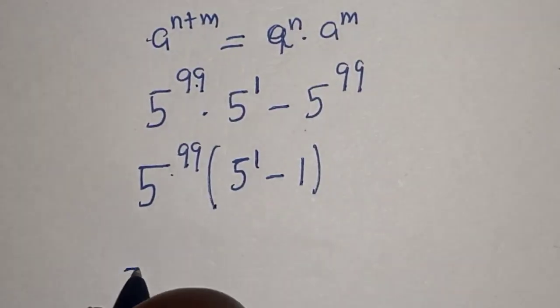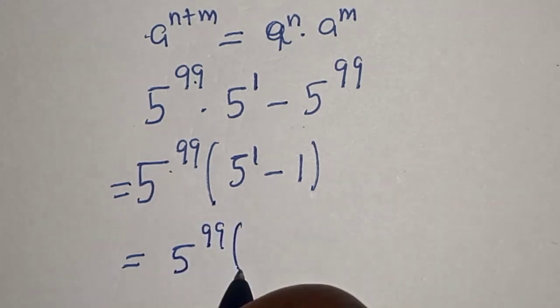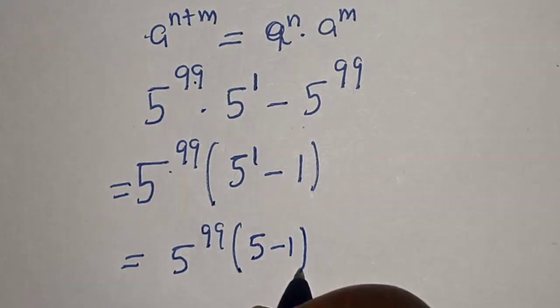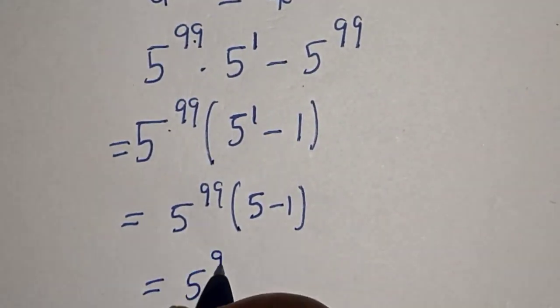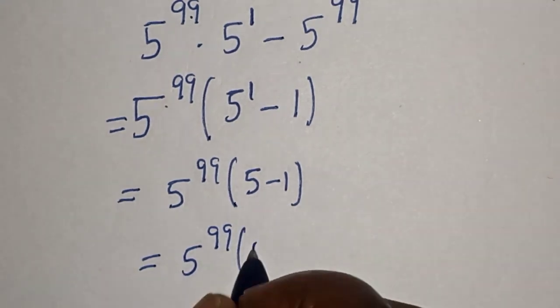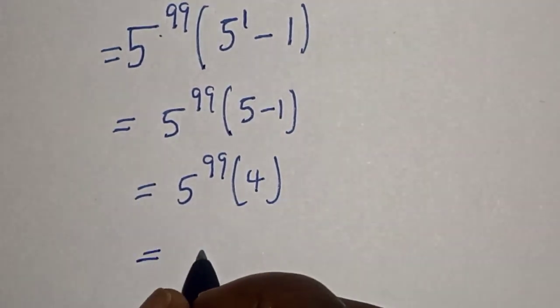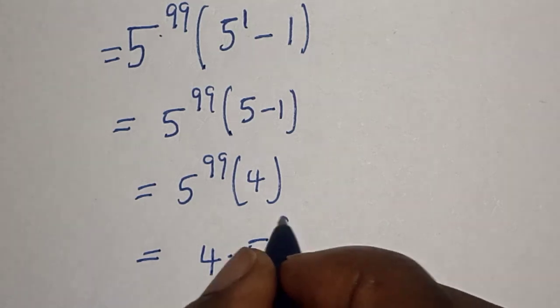Then this is equal to 5 raised to power 99 multiplied by 5 raised to power 1 is same thing as 5 minus 1. Then this is equal to 5 raised to power 99 multiplied by 5 minus 1. And that is 4. And our final answer is 4 multiplied by 5 raised to power 99.